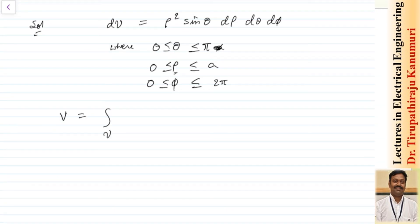So I can write the volume as the volume integral of ρ² sin θ dρ dθ dφ, where φ varies from 0 to 2π, θ varies from 0 to π, and ρ varies from 0 to a.